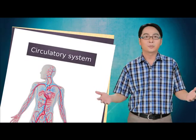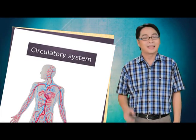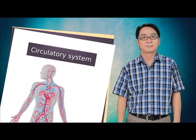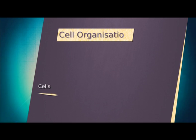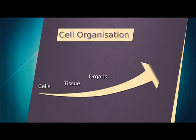A group of organs working together to perform a common function forms a system. All systems work together to make up an organism. The functions of all systems must be coordinated to work together for the survival of the organism.